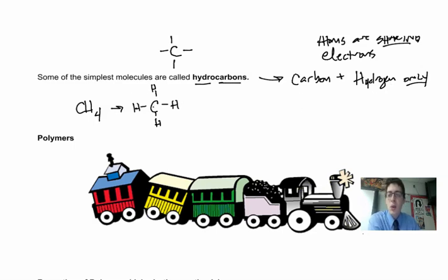This carbon always has to have four bonds around it. Hydrogen, on the other hand, can only have one bond. So this has four bonds, and hydrogen only has one bond.